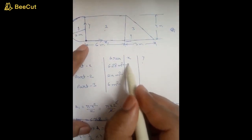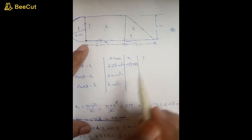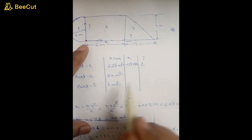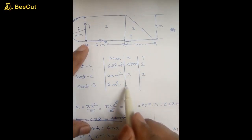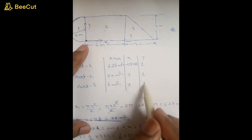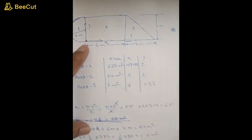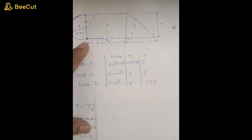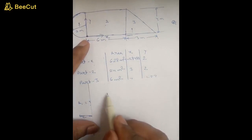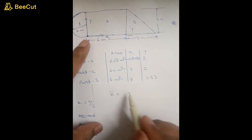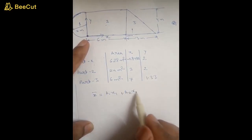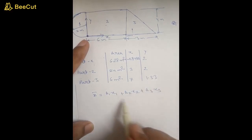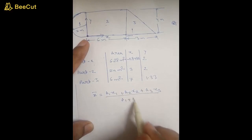Now we fill this data into the table: x1 is minus 0.8488, y1 is 2; x2 is 3, y2 is 2; x3 is 7, y3 is 1.33. The formula for the x-coordinate of the centroid of the composite section is: x-bar equals (A1·x1 + A2·x2 + A3·x3) divided by (A1 + A2 + A3).